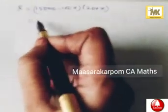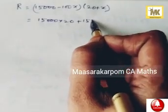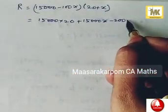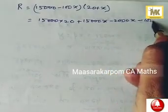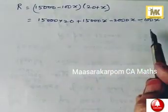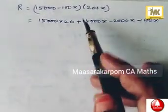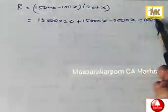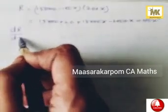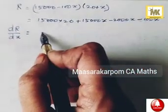This is equal to 15,000 into 20 plus 15,000x minus 2000x minus 100x squared. You can multiply and then do term-wise differentiation, or you can differentiate here itself using product rule. This is u, this is v, or you can do like this. Choice is yours. Now differentiate dR by dx is equal to, the differentiation of this is 0.